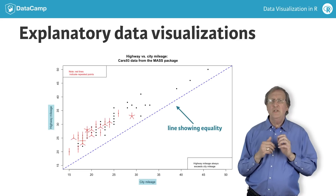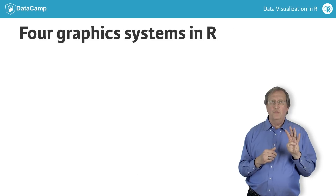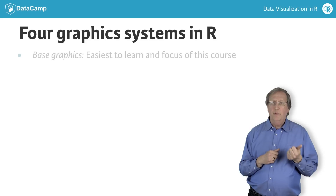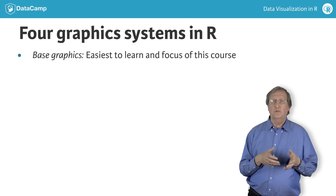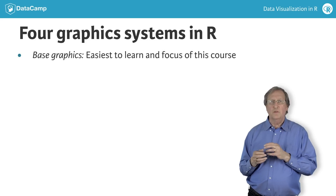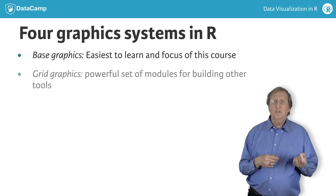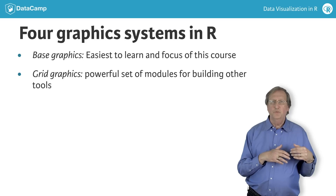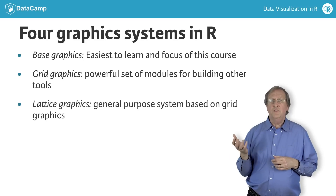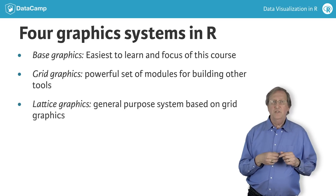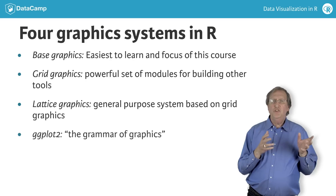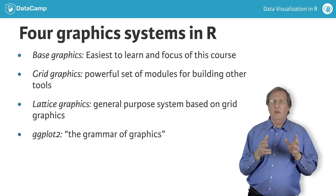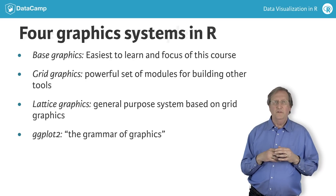To visualize data, R supports four graphics systems. Base graphics is the easiest to learn and is the focus of this course. Grid graphics provides a powerful set of modules for building other tools. Lattice graphics is a general purpose graphics system based on grid graphics, and ggplot2 implements the grammar of graphics in R and is also based on grid graphics.